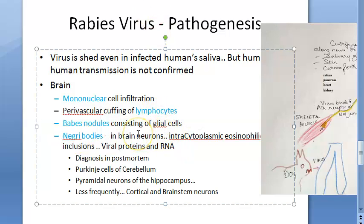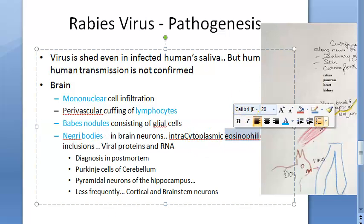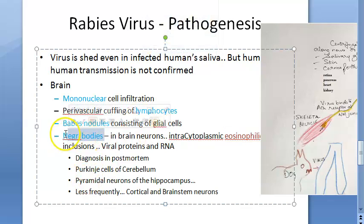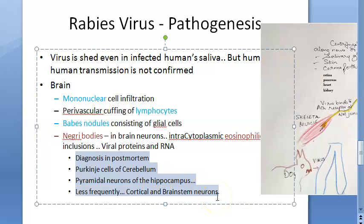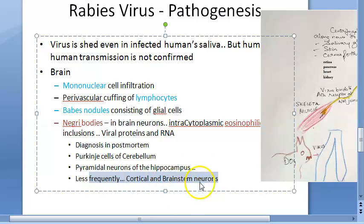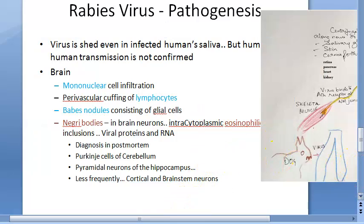Negri bodies are very important. They are intracytoplasmic eosinophilic inclusions found in brain neurons, made up of rabies viral proteins and RNA. They can only be used for diagnosis in post-mortem cases. Negri bodies are found in Purkinje cells of the cerebellum and pyramidal neurons of the hippocampus. Less frequently they can be found in the cortex and brainstem neurons.